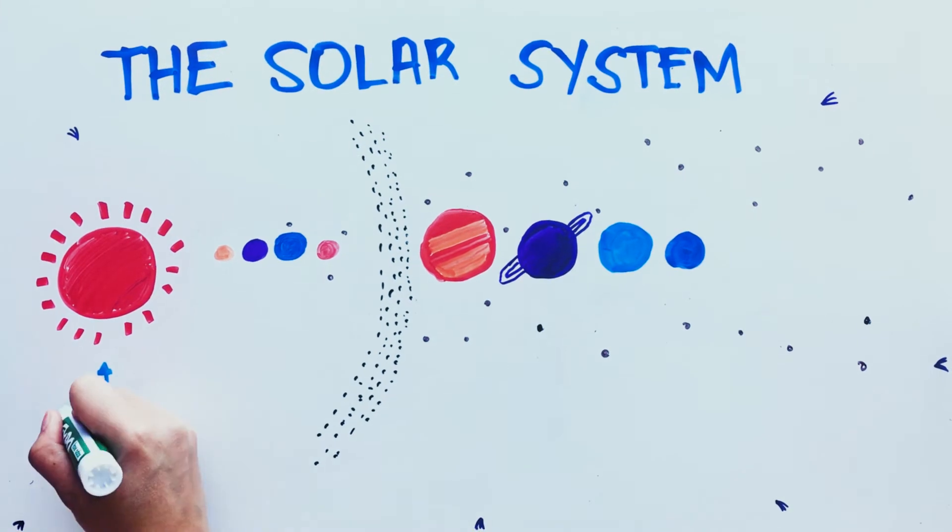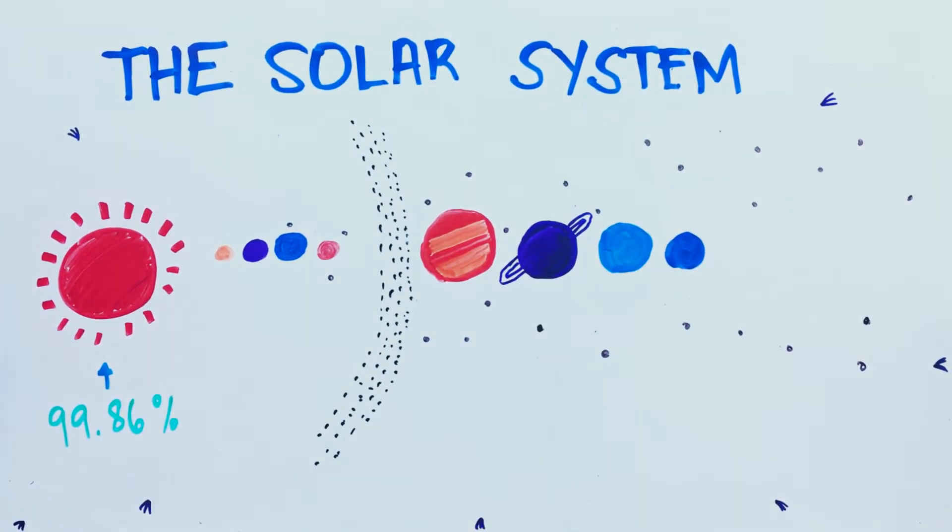The Sun accounts for 99.86% of the solar system's mass. All the planets fit together, as well as all of the asteroids, only make up about 0.14%.